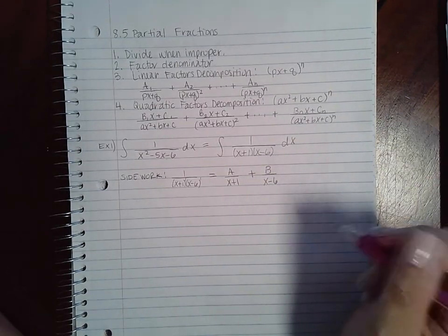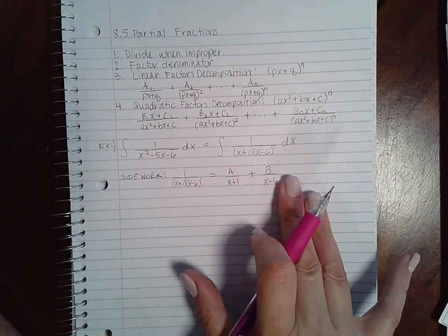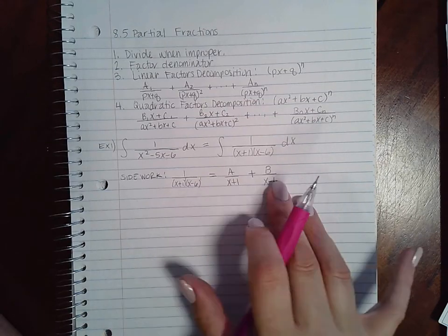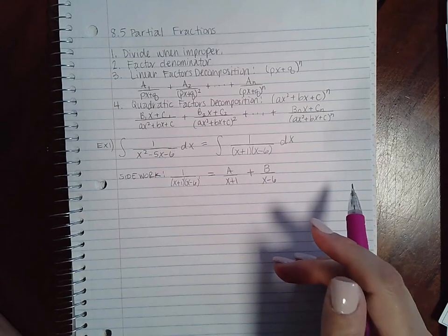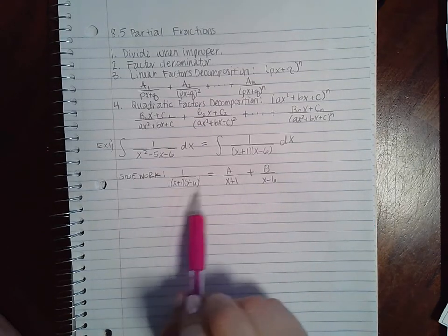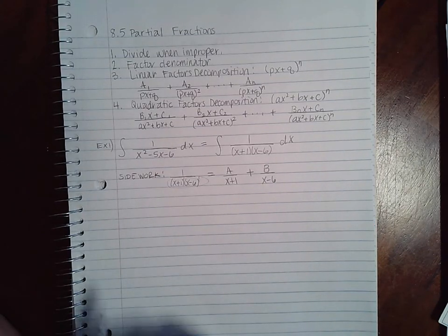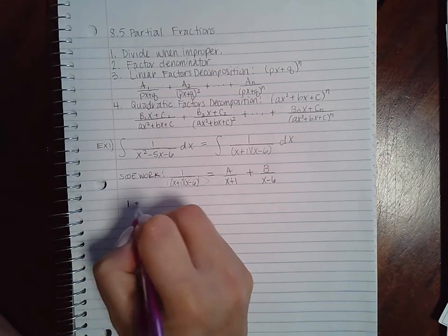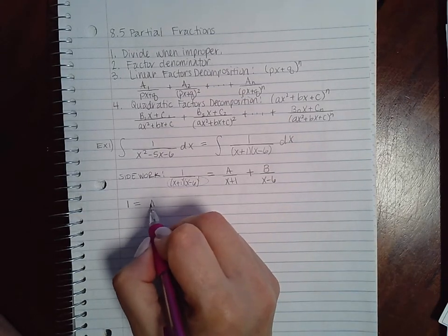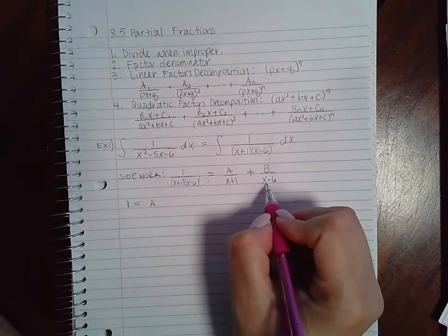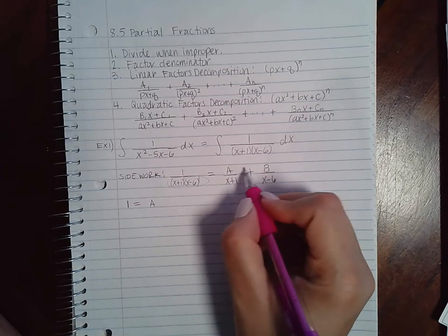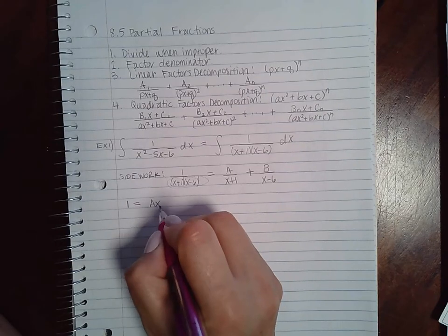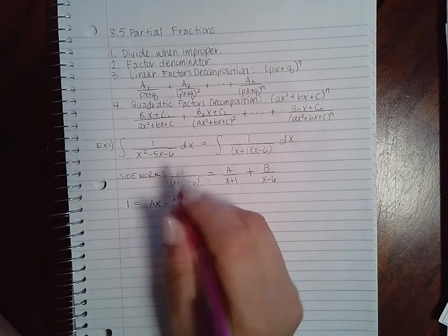So if I solve this equation by multiplying both sides, or every fraction by the common denominator, the common denominator in this case is x plus one and x minus six. So when I do that, I get one equal to a times x minus six, because the x plus ones will cancel, leaving me with the x minus six, which means ax minus six a.